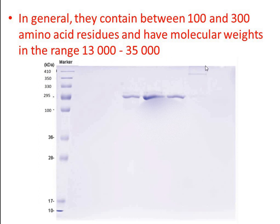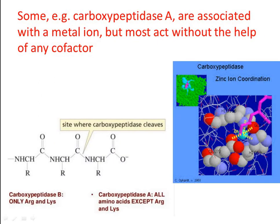The molecular weight is generally determined by the polyacrylamide gel electrophoresis method. Generally, monomeric enzymes do not require a metal ion, but some enzymes like carboxypeptidase A, which is associated with a zinc ion, do require a metal ion. Carboxypeptidase A can cleave all amino acids except arginine and lysine from the protein chain.